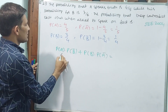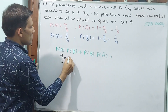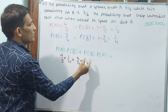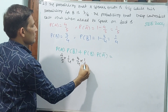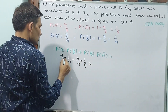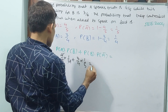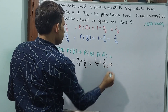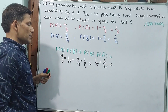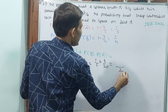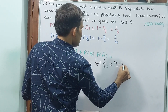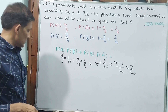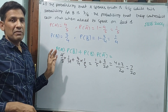We already have the figures. So: 4 by 5 into 1 by 4, plus 3 by 4 into 1 by 5. The 4s cancel out. That gives 1 by 5 plus 3 by 20. Taking 20 as denominator: 4 plus 3, which is 7 by 20. So 7 by 20 is the answer.